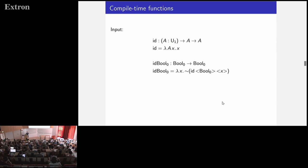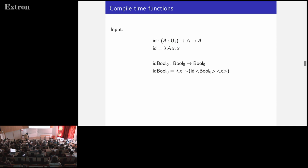What about using compile-time functions? Here we have the polymorphic identity function at the meta level, which can also be used at the object level — for example, to define an identity function on just booleans. We do a splice, and inside the splice we call the meta-level identity function, passing a quotation of a type and a quotation of a term of that type. The definitional isomorphism of quotation and splicing makes this well-typed. After staging, the application of the compile-time identity reduces to essentially nothing.